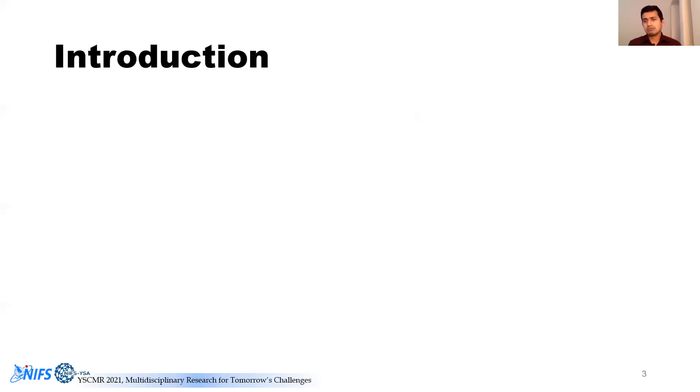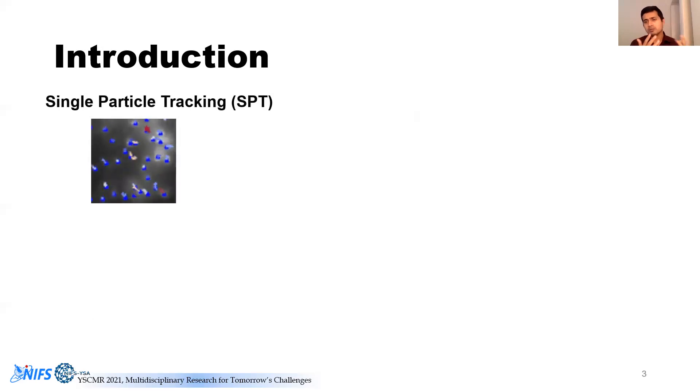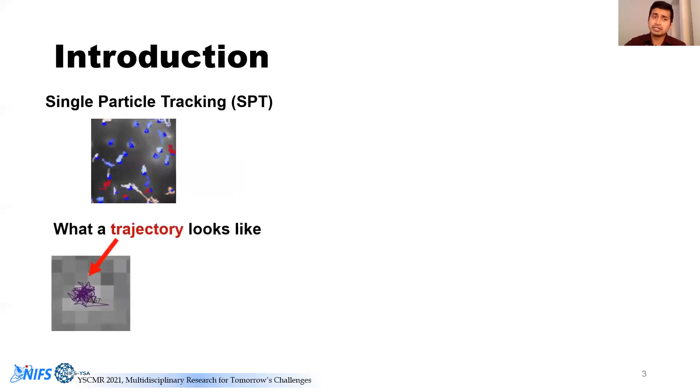This is what we call single particle tracking. It's a famous biophysical technique people use to track particles using a camera, and we actually observe their motion. From observing this, we are able to construct a trajectory, what you see here in color. Once we get this trajectory, we can extract information out of these particles.